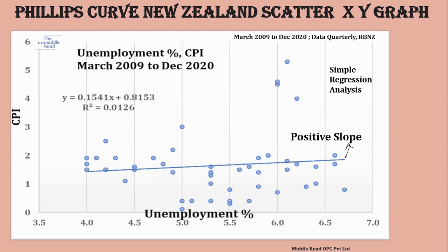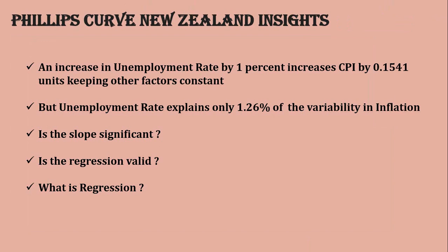The regression equation is: y = 0.1441x + 0.8153, where 0.8153 is the intercept at x equal to 0. What it means is that an increase in the unemployment rate by one percent increases CPI by 0.1441 units (or percentage), keeping other factors constant. However, as we add more variables to regress, this value would also change. Looking at the R-squared value — it means the unemployment rate is only explaining 0.126 percent of the variability in CPI, which is very low.